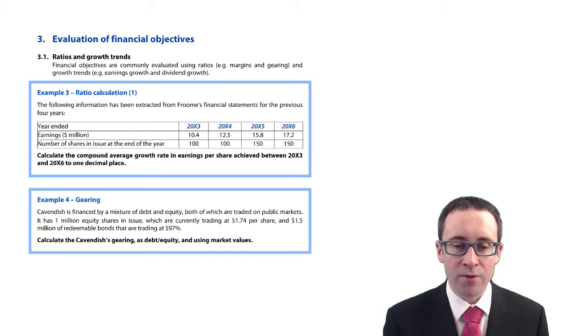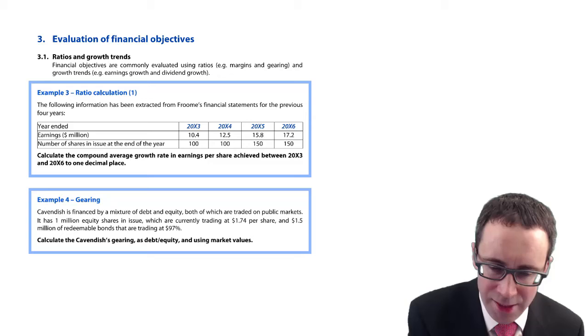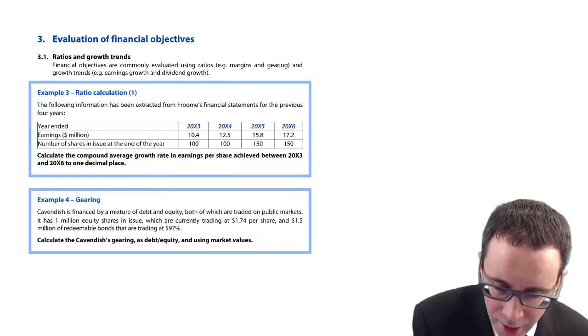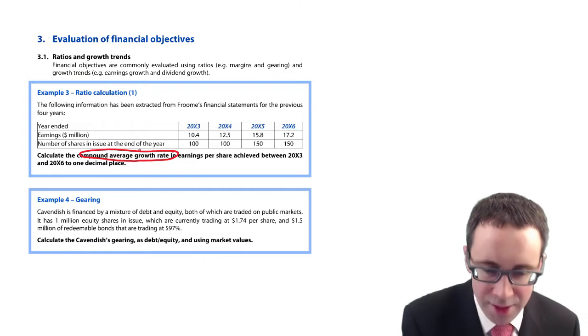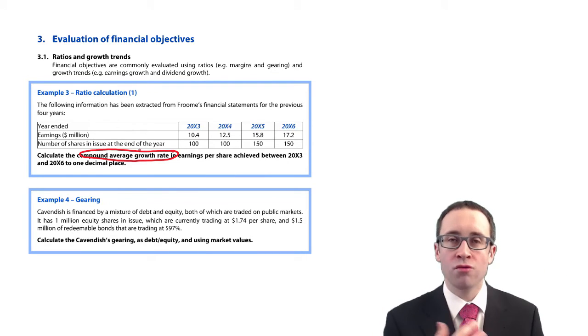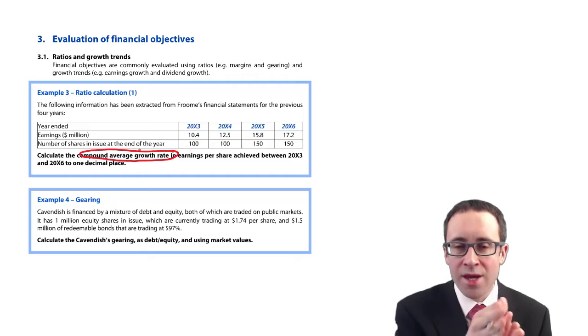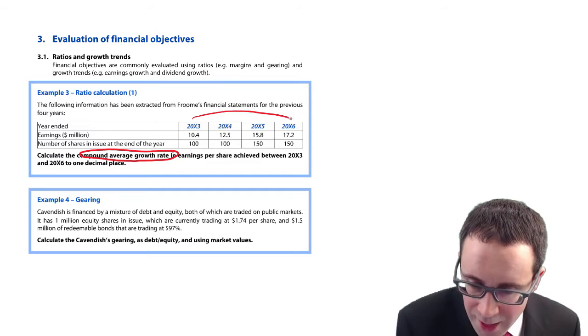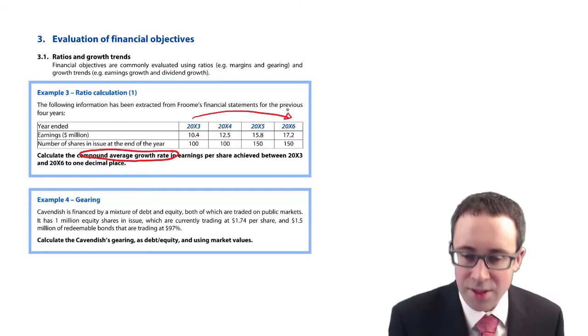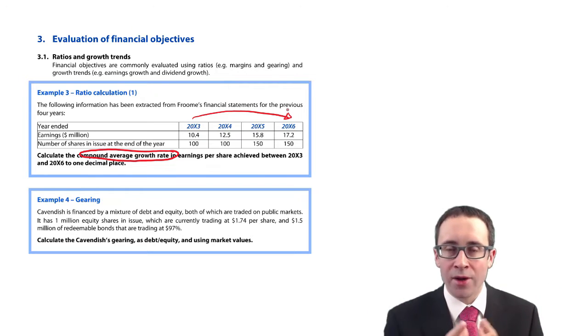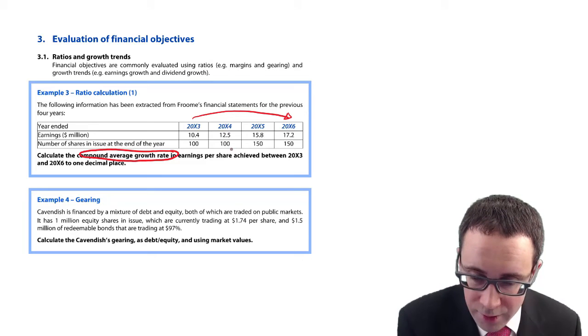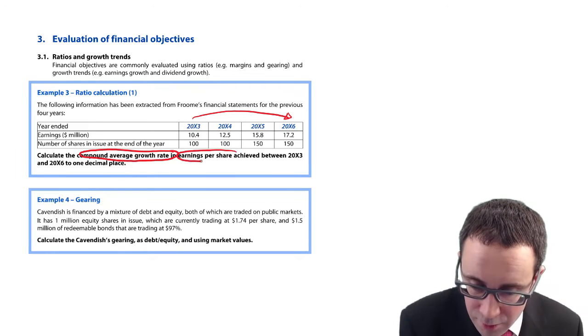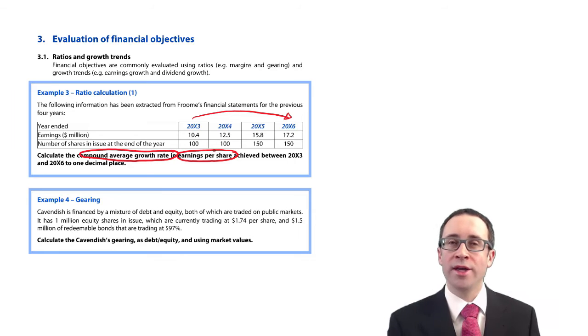First, the example we've got is all about ratio calculations. This one is thinking about the compound average growth rate. Compound is not looking year to year, it's looking over a period of years - from X3 to X6.